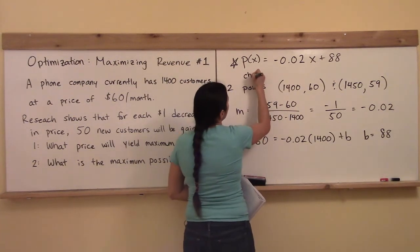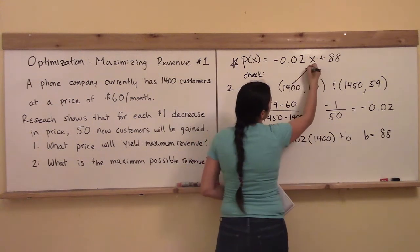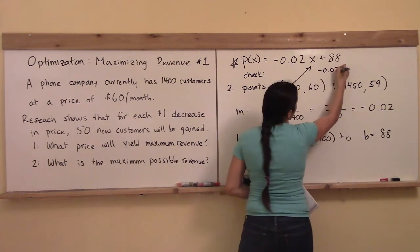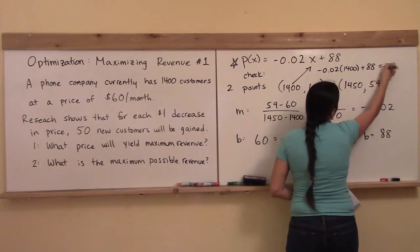So let me show you how you're going to check. Before you move on, you want to check, just using one of the points, if you put the 1,400 in where the x is, times 1,400, then you add 88, what do you get out of that?